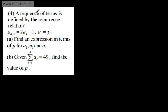Okay, question 4. A sequence of terms is defined by the recurrence relation a sub n plus 1 is equal to 2 a sub n minus 1 with a sub 1 equal to p. In part a, we need to find an expression in terms of p for a2, a3 and a4. Exactly the same.